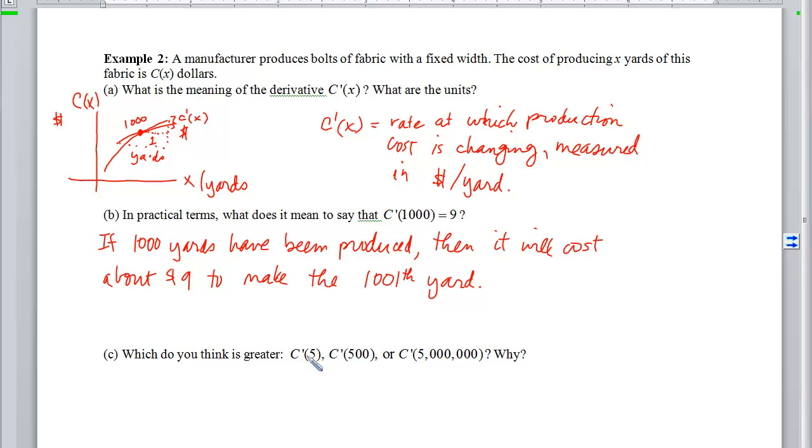So which do we think is greater? The cost that it's going to take to produce the 501st yard, or the cost that it's going to take to create the 5,000,000th and first? Why?